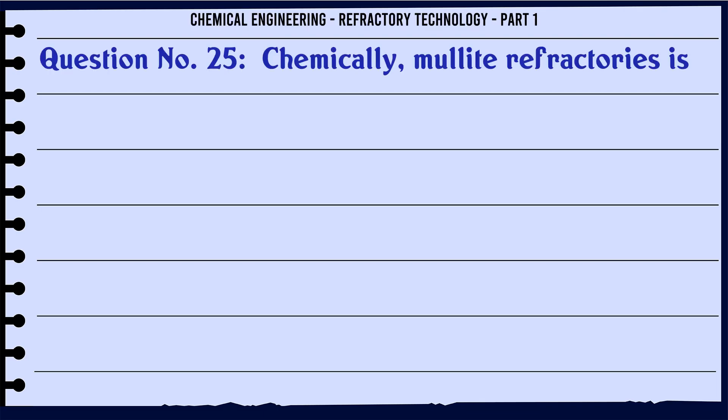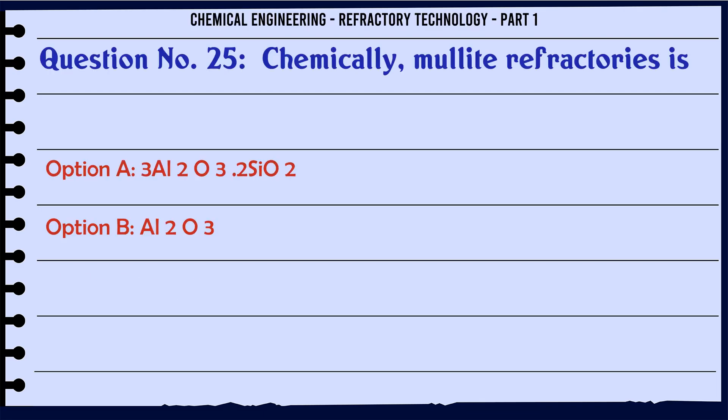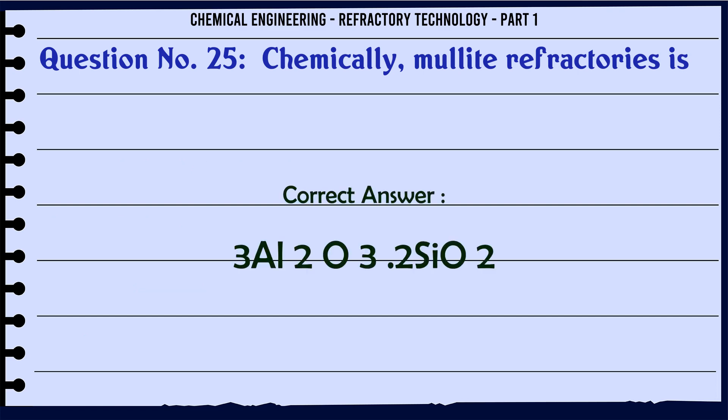Chemically, mullite refractory is: A. 3Al₂O₃·2SiO₂, B. Al₂O₃, C. ZrSiO₄, D. ThO₂. The correct answer is 3Al₂O₃·2SiO₂.